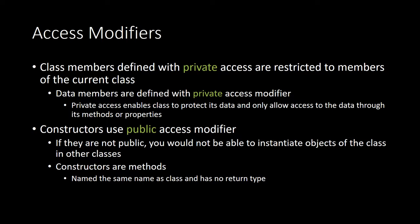Class members defined with private access are restricted to the members of the current class. If you create another class and label them as private, you won't be able to see it. Data members defined with a private access modifier enable the class to protect its data and only allow access through its methods or properties. Constructors use a public access modifier because if they're not public, you won't be able to instantiate any objects from the class. Constructors are methods named the same as the class, with no return type, and if set as public, they can be pulled from a different class as well.